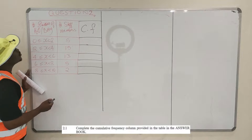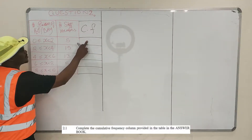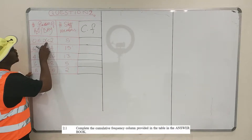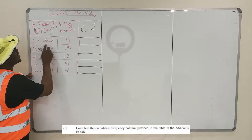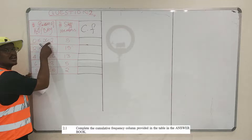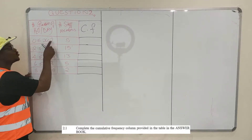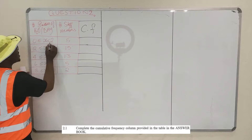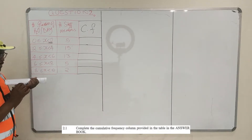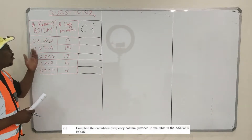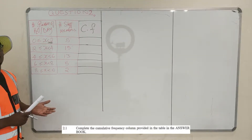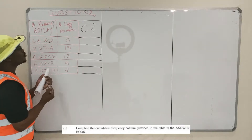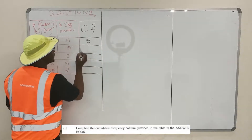You want the cumulative frequency, which is the same as your running total. At this point, all the staff members here drank less than 2 glasses of water. So you want to know how many staff members drank less than 2 glasses of water — there are 5 of them. So put 5 there.